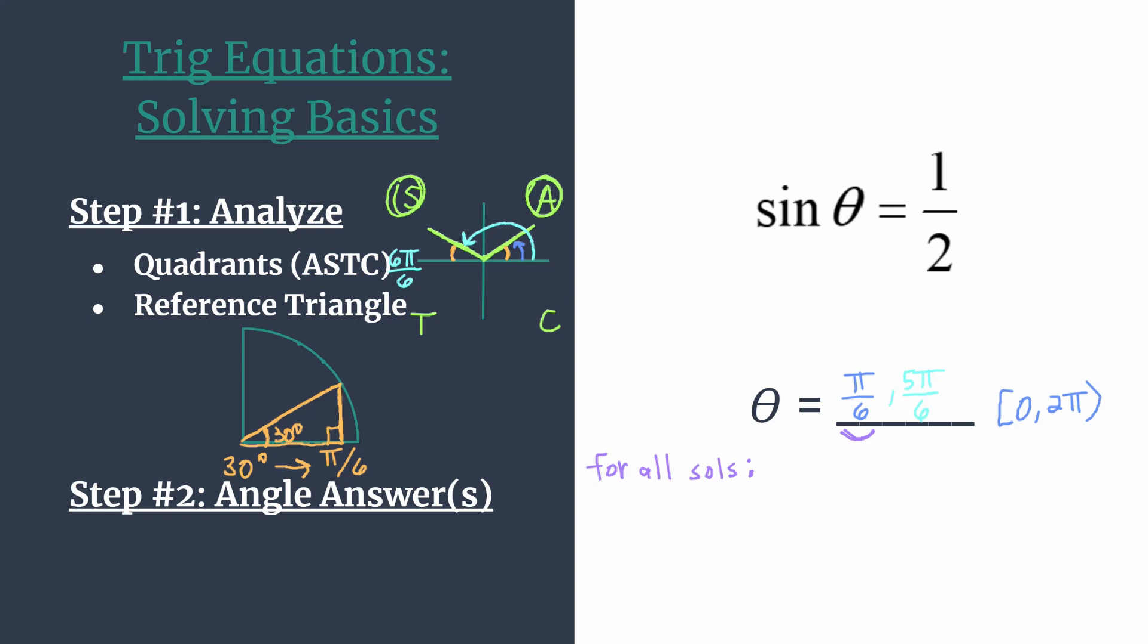But remember that we have something called a coterminal angle, and coterminal angles are angles that share the same terminal side. So if you rotate an entire rotation around, adding 2 pi, that's a full rotation, you'll get another angle. Do that math, it'll be 13 pi over 6. That's coterminal to pi over 6 and is also a solution. And you could do that an infinite number of times rotating 2 pi around in either direction.